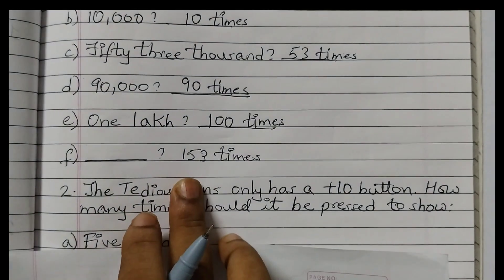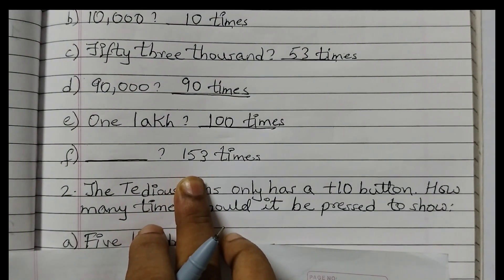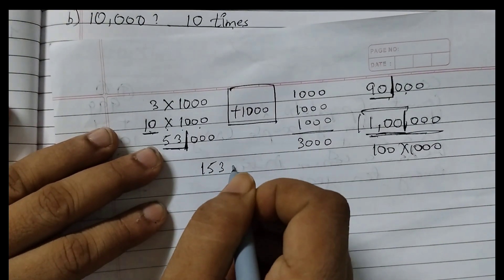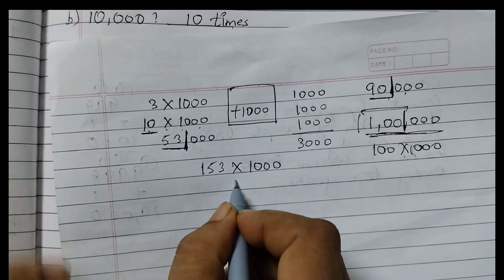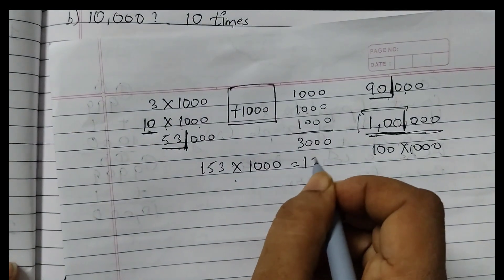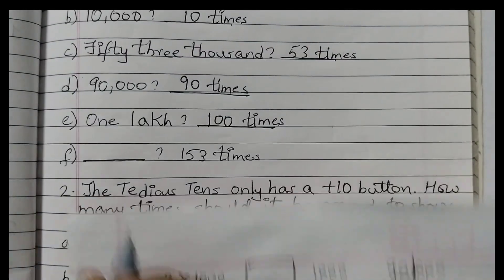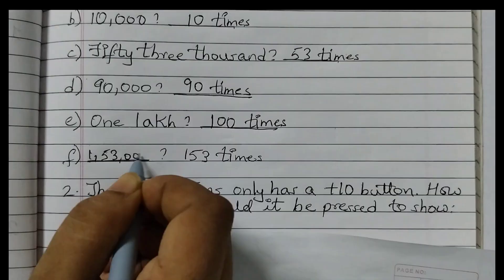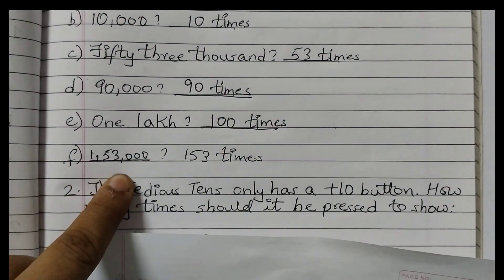Next one is 153 times. That means if you press the button 153 times, what would happen? You simply need to multiply 153 times 1000. Times means multiplication. So that will be 153,000. You will get 153,000.